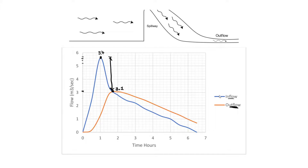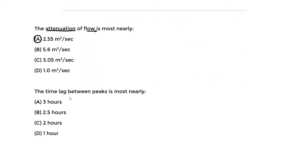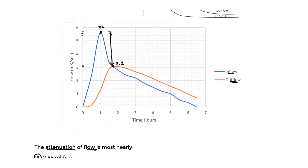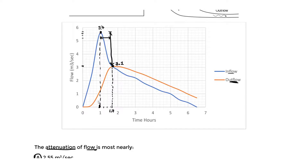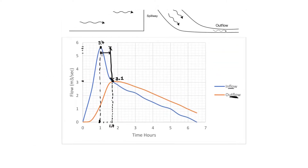The time lag is the time difference between the peaks of the inflow and outflow hydrographs. Reading from the graph, the inflow peak occurs at approximately 1.0 hour and the outflow peak at approximately 1.7 hours, giving a time lag of 0.7 hours. Reading more accurately gives around one hour, so the closest answer is D.